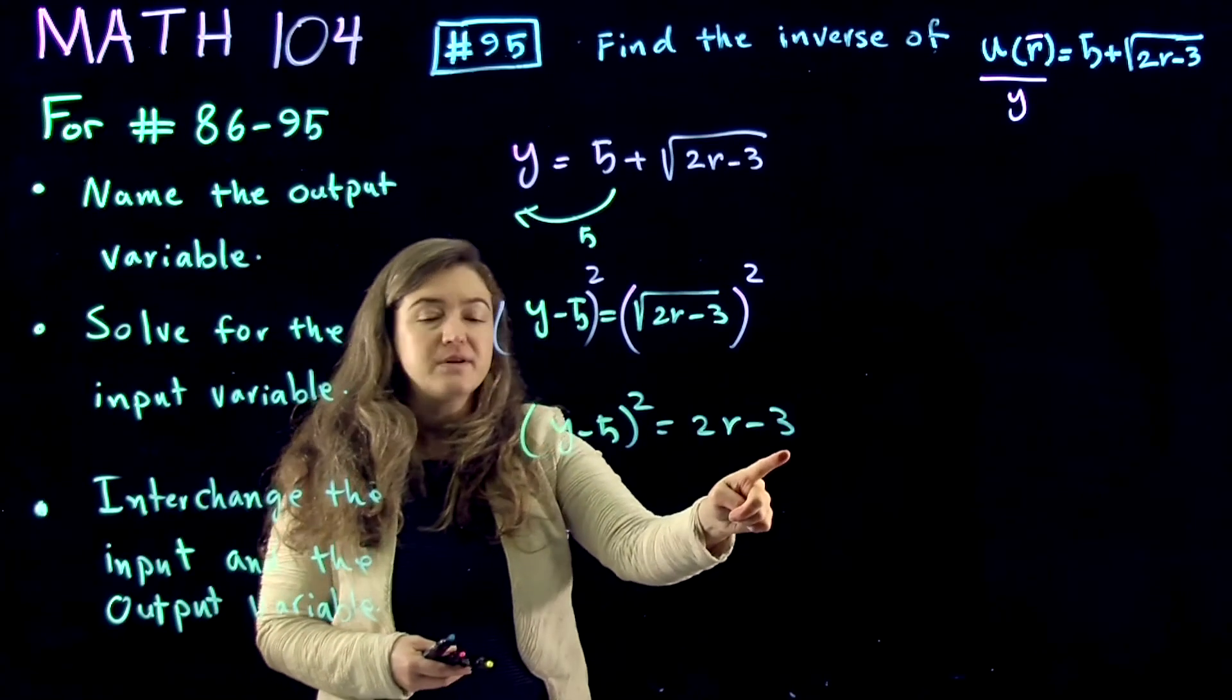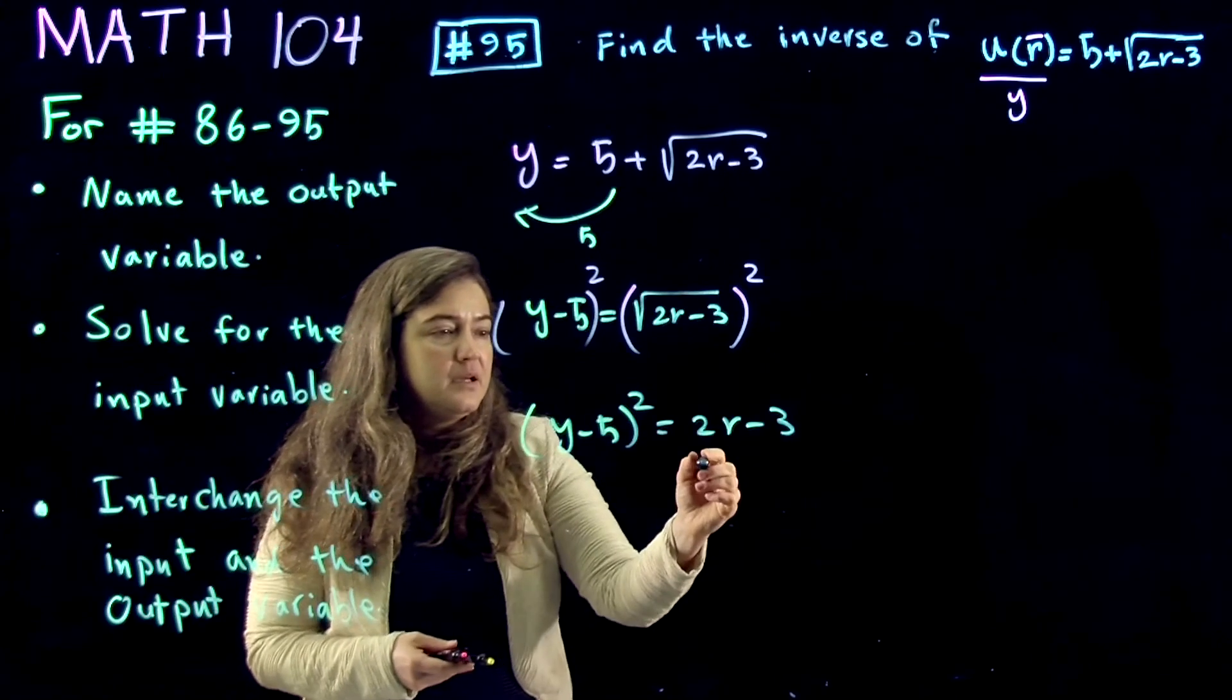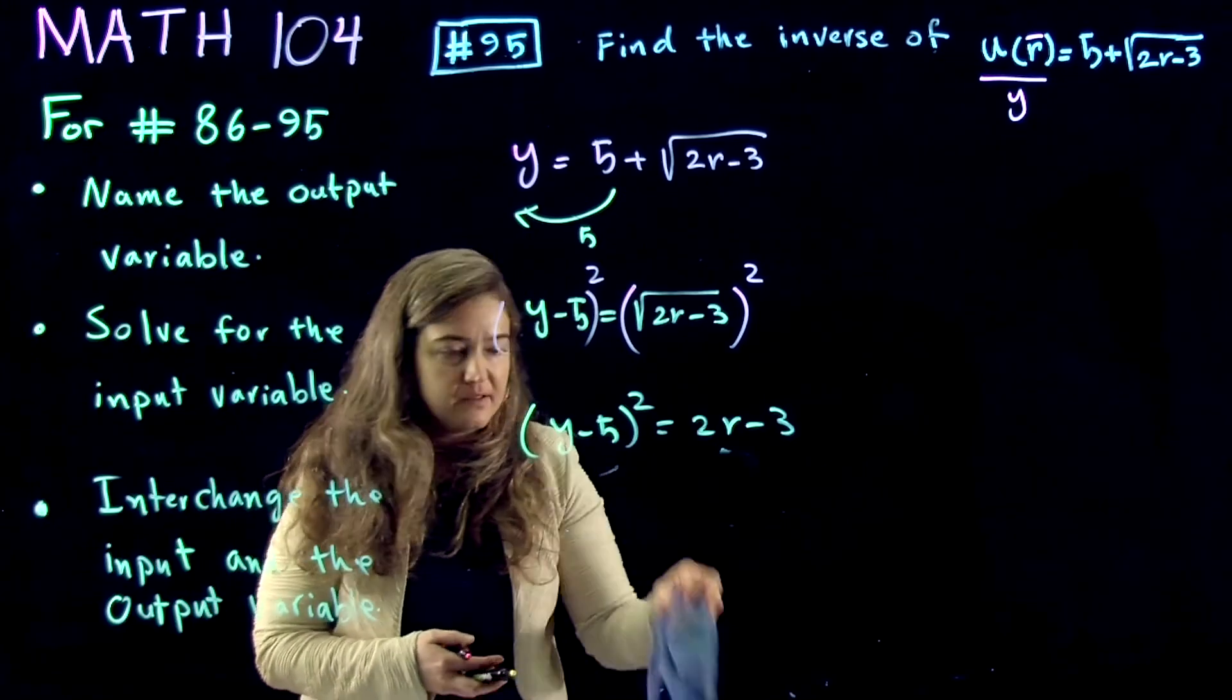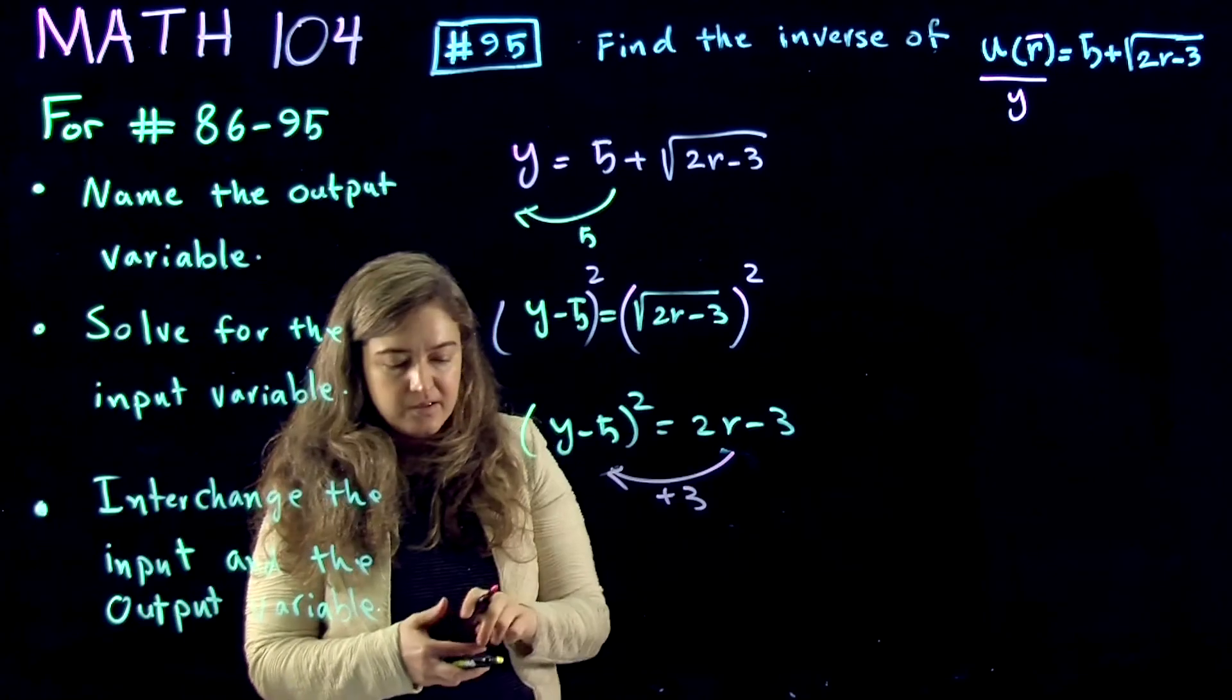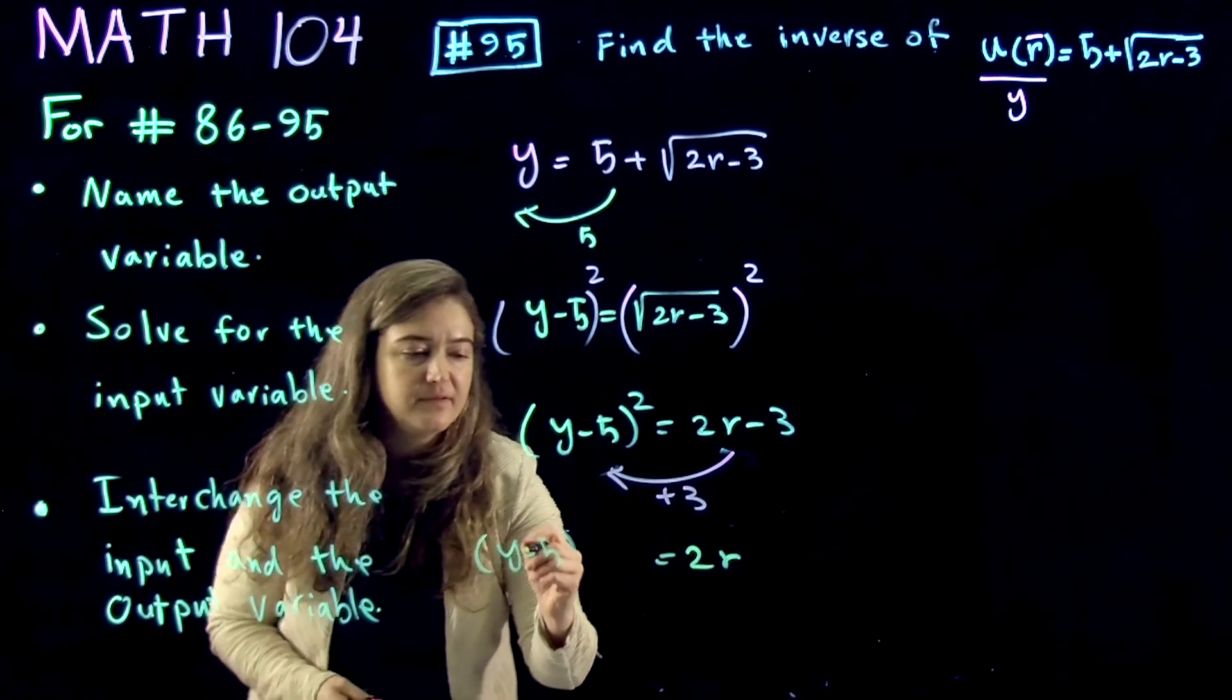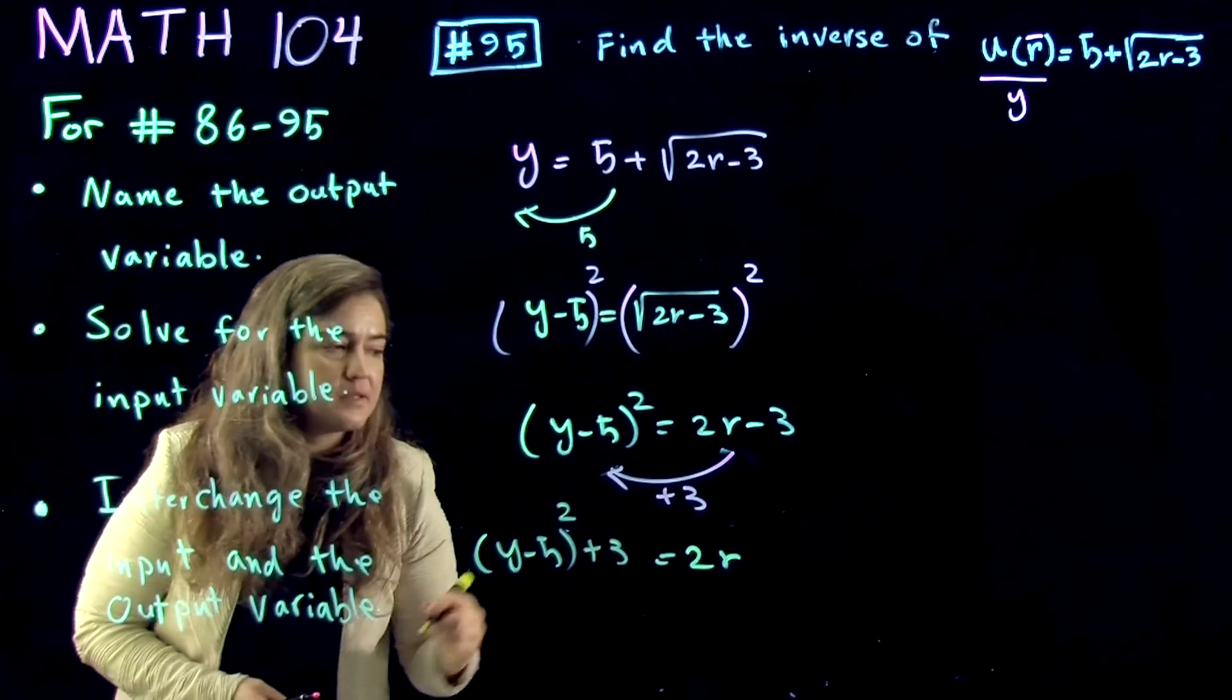Now, here, one more step to isolate r, and that would be to add 3 to both sides to take 3 to the other side. So what we get is 2r is equal to y minus 5 to the power of 2 plus 3.